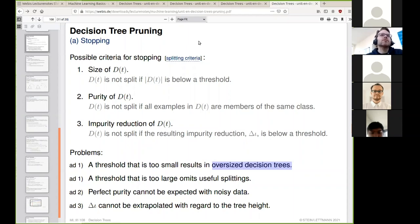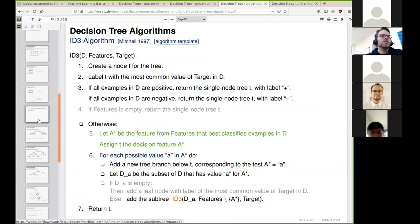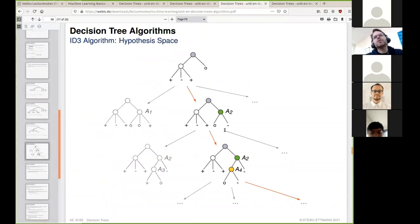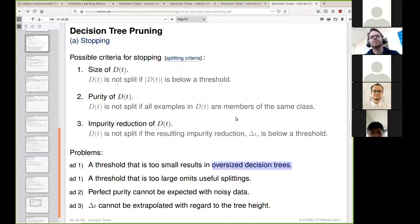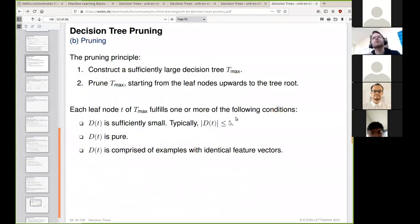The third criterion is impurity reduction - if impurity reduction is below a threshold, we stop splitting. However, we cannot predict whether a subsequent impurity reduction might not be high. We cannot skip ahead, we don't have lookahead. There's no way of gaining this knowledge other than exploring the feature space more exhaustively, which is usually not feasible given the explosion of possibilities.